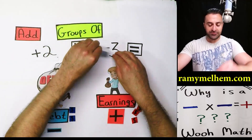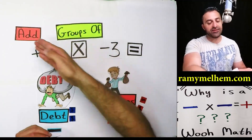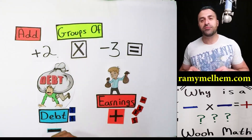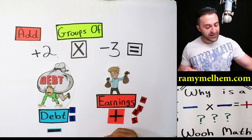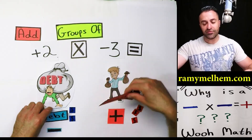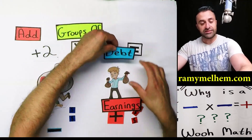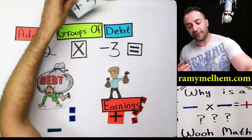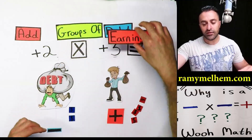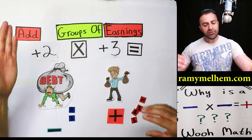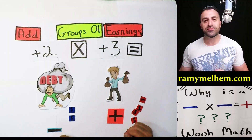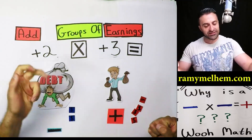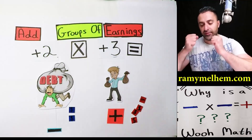What does the second symbol mean? It doesn't mean add and it doesn't mean subtract — that's only the first number. This symbol is talking about earnings. If it's negative, it's going to be the debt; if it's positive, it's going to be earnings. How do you add groups of earnings? You say 'here, you earned two bags, two groups' — and you give it to him. That's adding two groups of earnings.